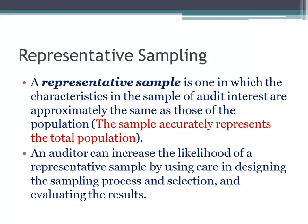Understanding the journals included in a business cycle is also important. When we talked about both the sales and collection cycle and the acquisition and expenditure cycle, one of the first things covered was what constitutes audit evidence in each of those cycles — what files and documents auditors use. Understanding how your client records their transactions helps you identify a representative sample and the appropriate documents for your sample selection. An auditor has to be very careful in designing and approaching the sampling process and selection, as well as evaluating those results.